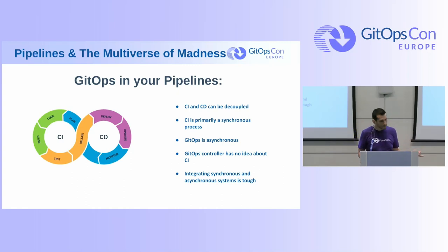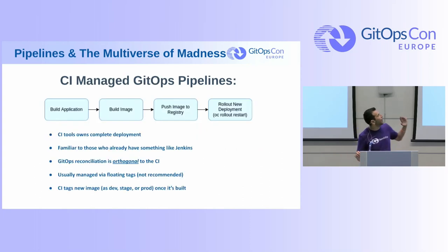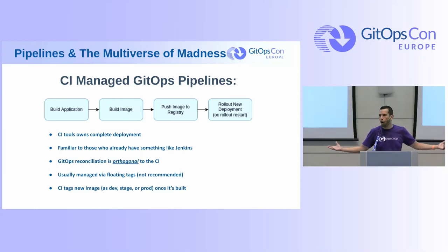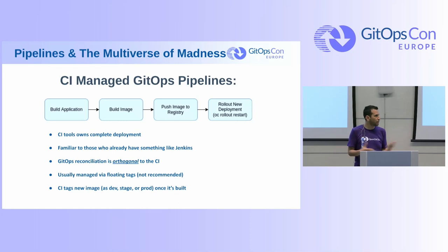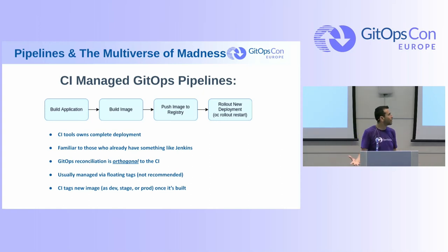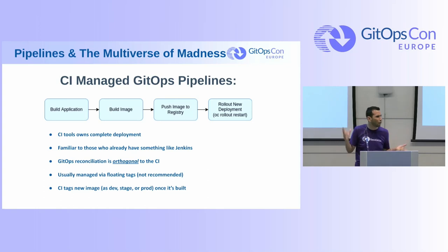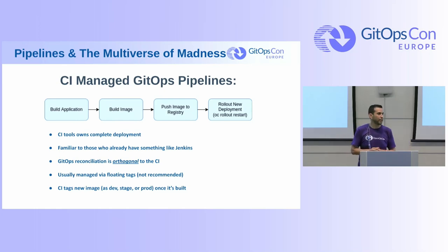I've seen three solutions out there. What I like to call a CI-managed GitOps pipeline, meaning the CI basically owns the entire process — this is more of the traditional CI/CD, like with Jenkins, Bamboo, Chef, Puppet, Ansible. This fits more into that aspect where the CI tool basically owns the whole thing. GitOps is kind of the last thought — they don't really know about each other. This is kind of where I see people start because it feels familiar. The CI does the whole thing, and when it's ready to deploy, it just tags that image.